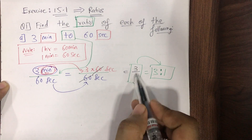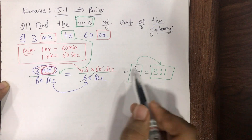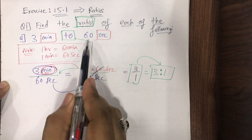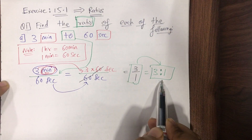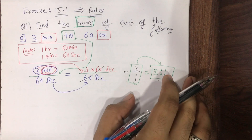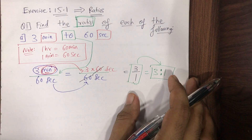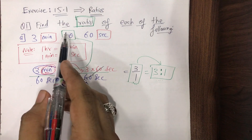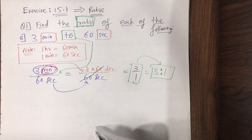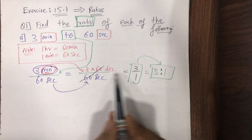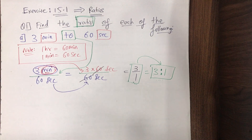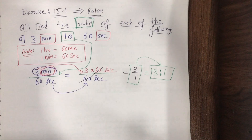This fractional form can also be called a ratio, but whenever a question is like '3 minutes to 60 seconds,' we specifically write the answer in colon notation — so 3:1. If you leave your answer as a fraction, one mark may be deducted. Pause the video and do it yourself.